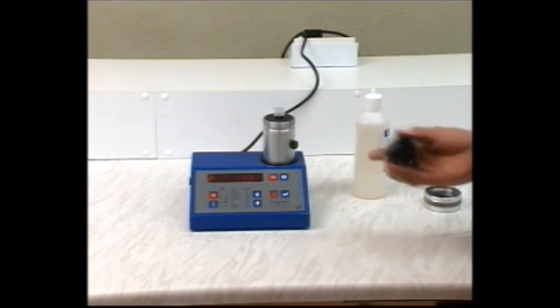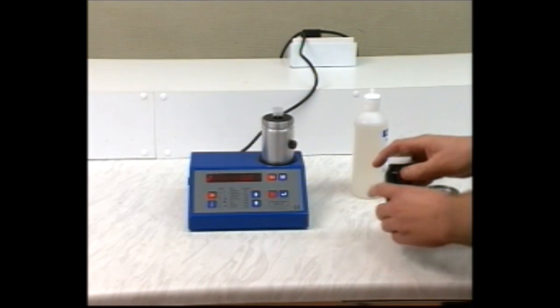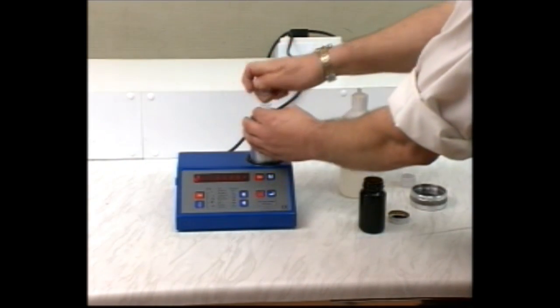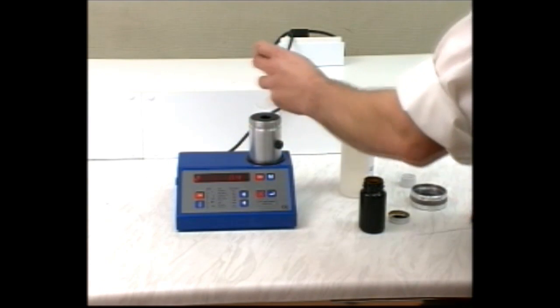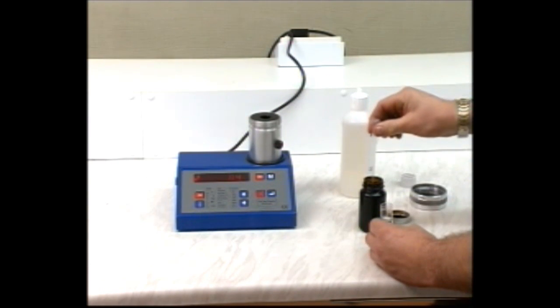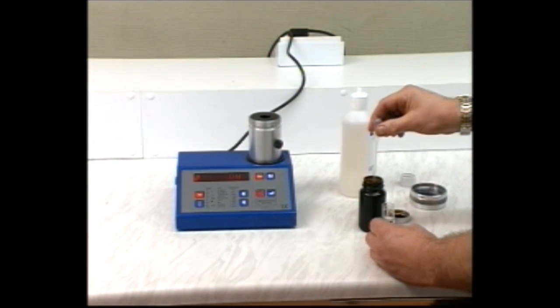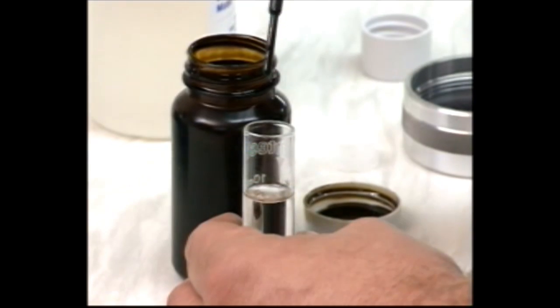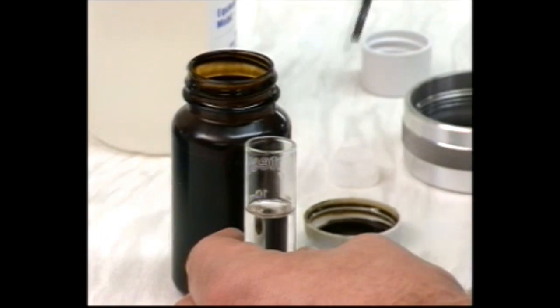Shake the oil sample well and remove a small amount with the disposable pipette. Return one drop to the oil sample, and add the next drop to the tube.